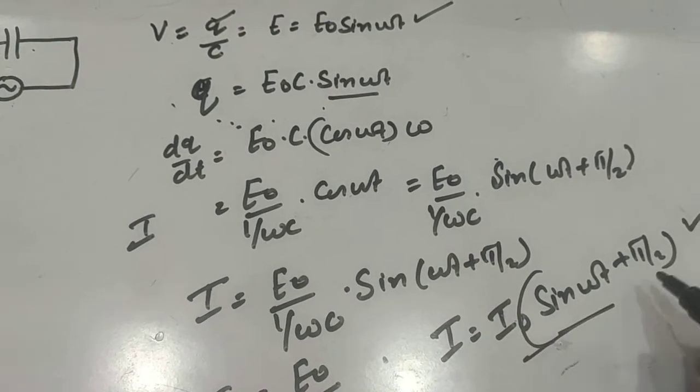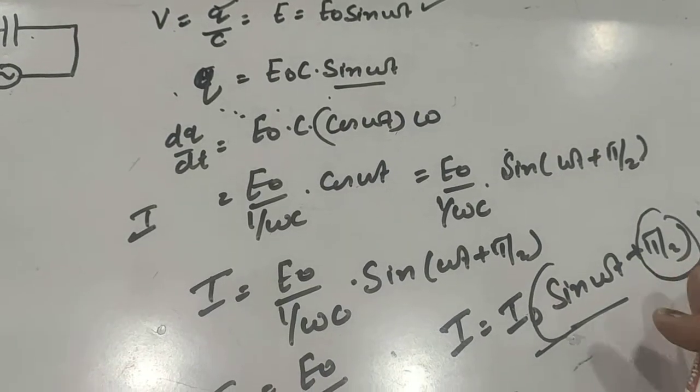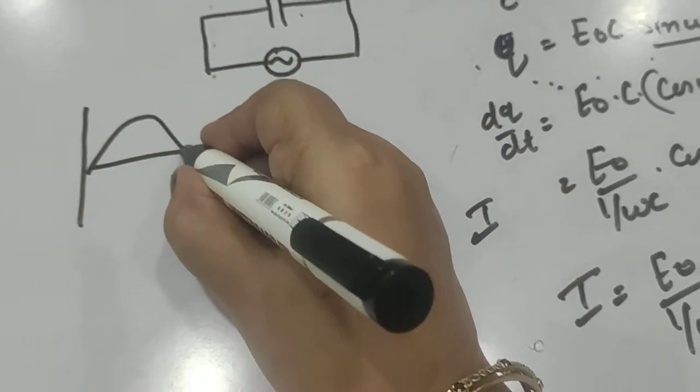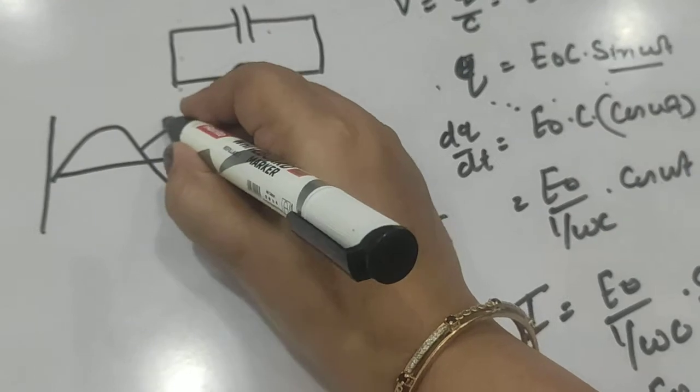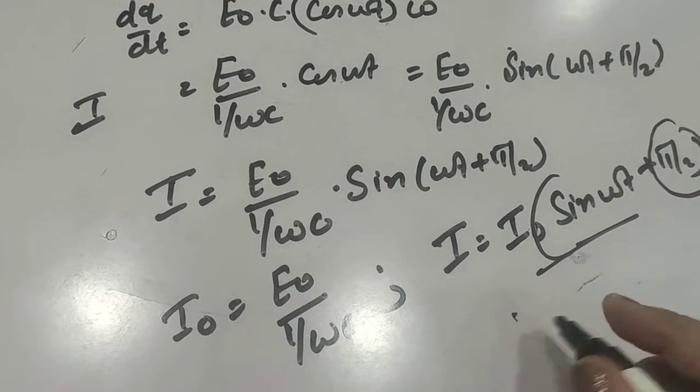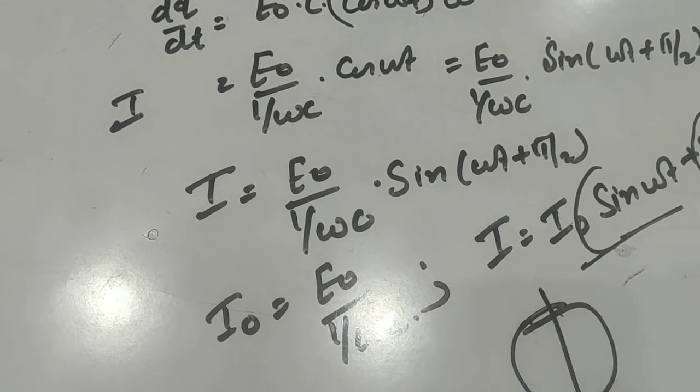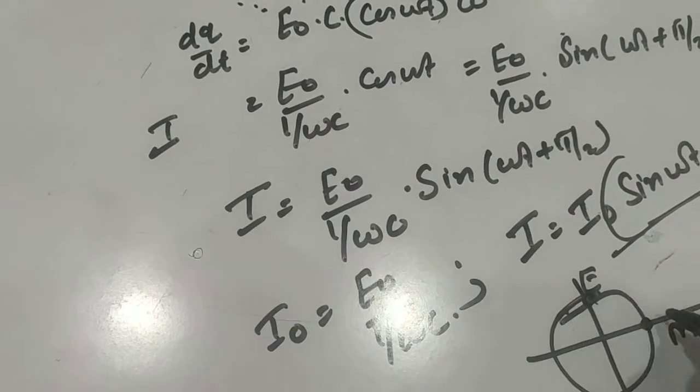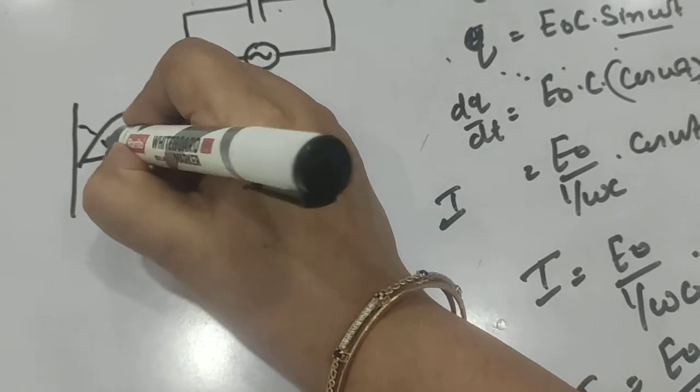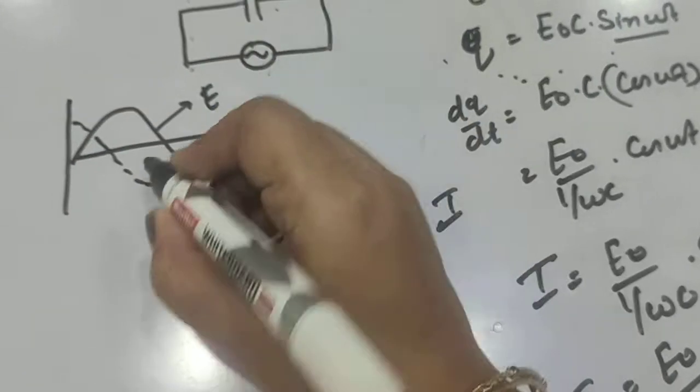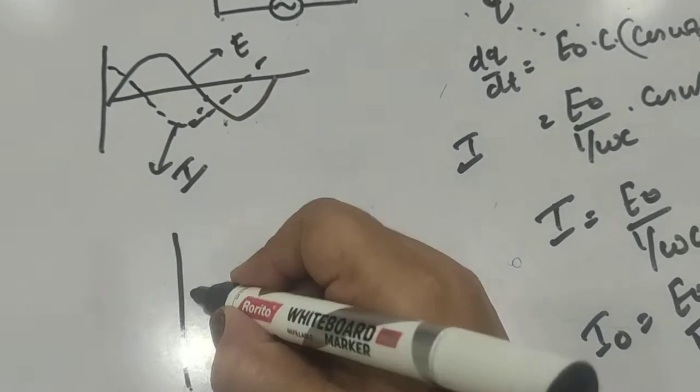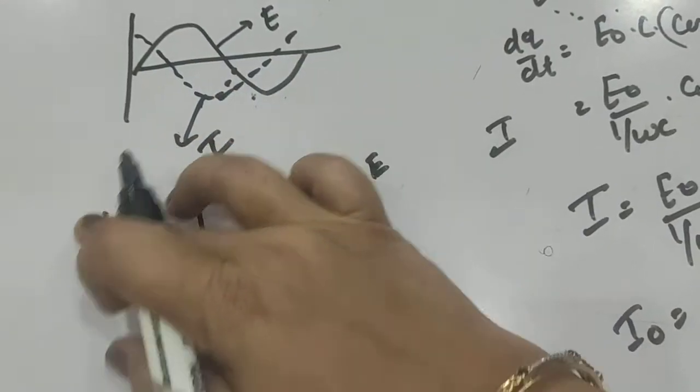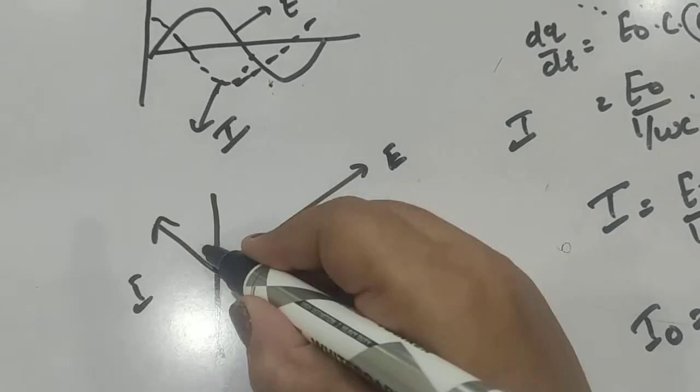So now let's draw the wave representation. Here voltage starts from the mean position, this is EMF, and current is leading by π/2. Leading by π/2 means in circular path, if we study the phase relationship, this is mean position, so current will start from this extreme position, leading from the right. This is the current variation. And in a phasor diagram, if we want to represent, this is E, so I will be in a smaller amplitude at 90 degrees, leading voltage by 90 degrees.